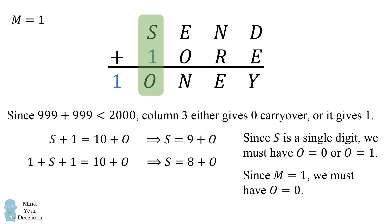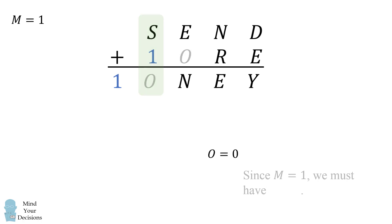Now since M is equal to 1, we can't have O be equal to 1, therefore O must be equal to 0. So we figured out another digit.